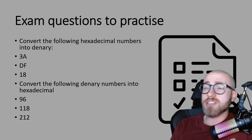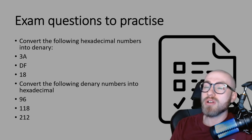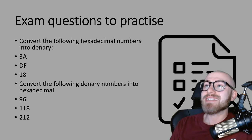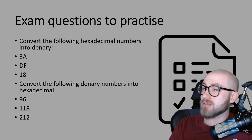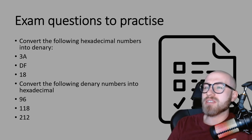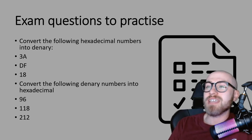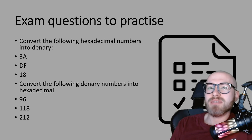Your best way to get better at these is by practicing lots of different conversions. For the first section, try converting these hexadecimal values into denary: 3A, DF, and 18 — that's 1 and 8, not eighteen. For the second part, convert the following denary numbers into hexadecimal: 96, 118, and 212.